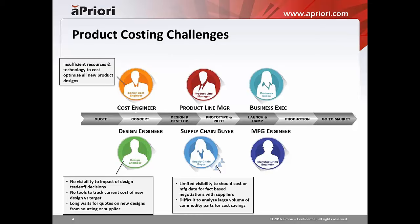The folks in sourcing and supply chain also have a really tough job — they're trying to negotiate the best price and have a collaborative partnership with their suppliers. But they have limited visibility to should-cost or manufacturing data for fact-based negotiations. A lot of times they rely on information from their ERP system from a past purchase, but because of the dynamic nature of markets and changes in material, labor, and logistics costs, using historical data is very challenging for new products coming to market.